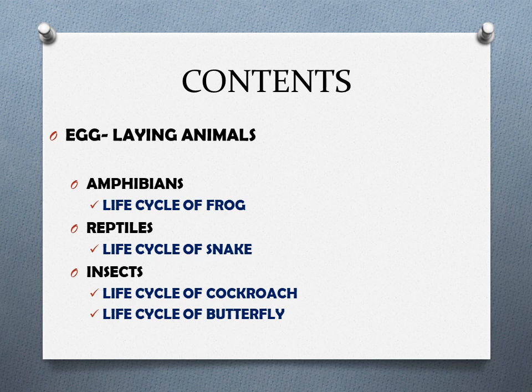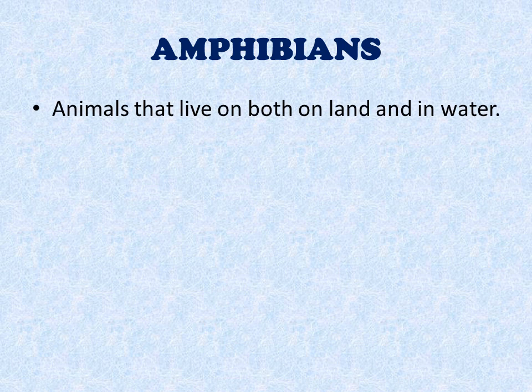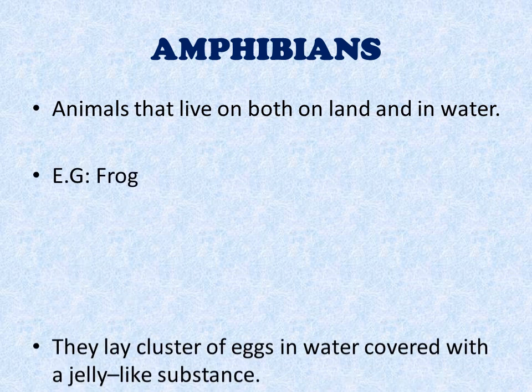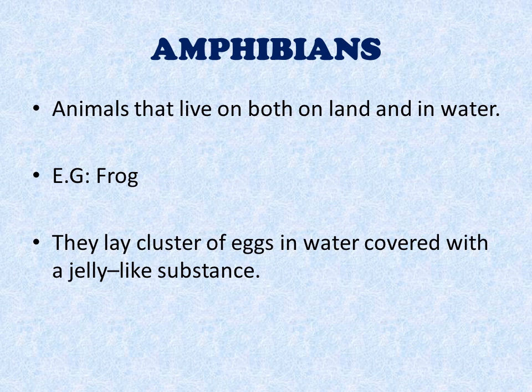Egg-laying animals. Amphibians — what are amphibians? Animals that live both on land and in water are called amphibians. Examples of amphibians are frog. They lay cluster of eggs in water covered with a jelly-like substance. Frog is an amphibian which lays cluster of eggs in water and lives on both land and in water.